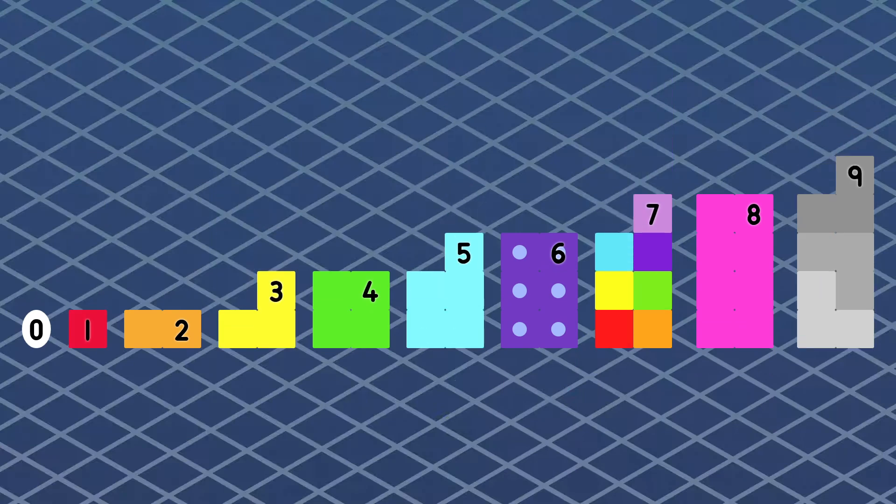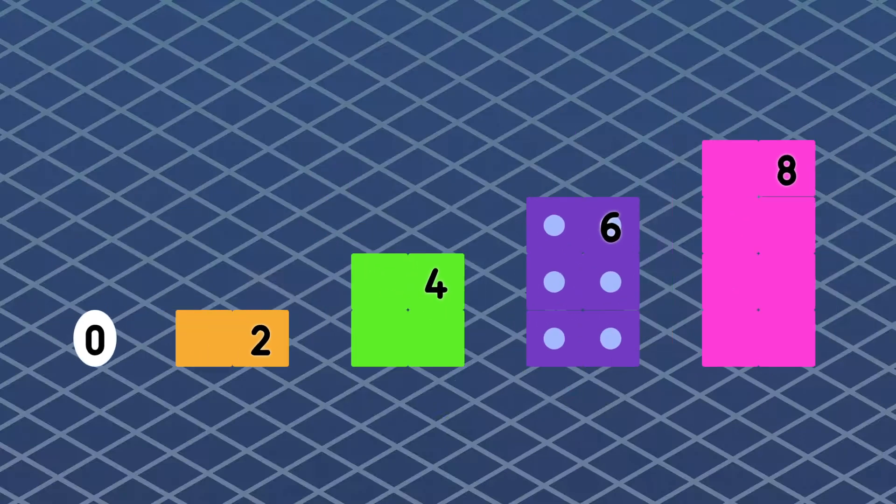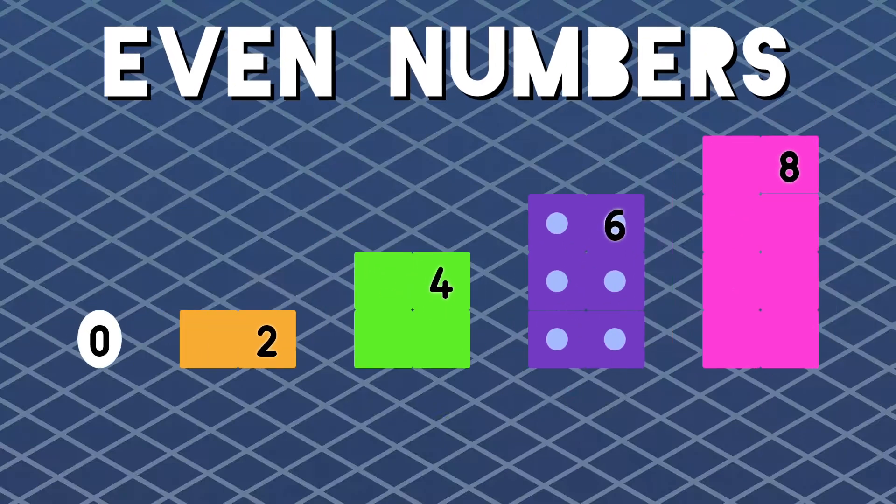9. The even numbers are 0, 2, 4, 6, 8. In line we're the even numbers and we can relate